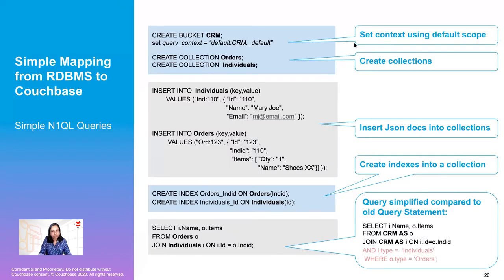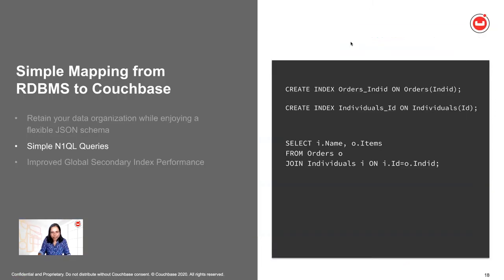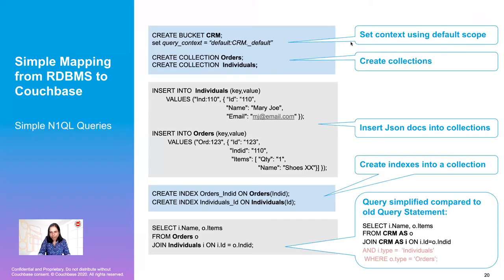Putting it all together, this is what we did to work with collections using N1QL: I set the context using the default scope, created a bunch of collections, inserted JSON documents, created indexes, and ran a query doing a join on both collections. Those of you who have been using Couchbase might quickly notice that previously you would have additional predicates using a type field in order to sub-select the types of documents. None of that is necessary anymore — you just refer to the collections directly.